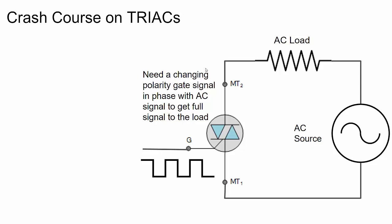That phase-matching challenge is hard to overcome with just a microcontroller. One approach is to use a resistor divider network to reduce the AC waveform voltage and connect it to the gate, using the AC source waveform itself to properly bias the gate so the full AC waveform can flow. That's one way to create a gate signal that turns the triac on for both the positive and negative portions of the AC waveform.